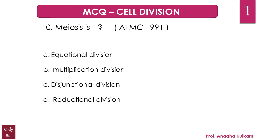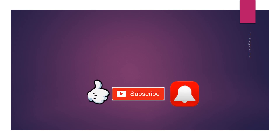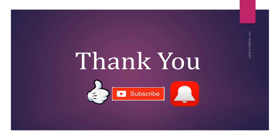The tenth question is: meiosis is — A) equational division, B) multiplication division, C) disjunctional division, D) reductional division. The correct answer is D) reductional division. Hope you liked this — do comment and subscribe if you haven't. Thank you.